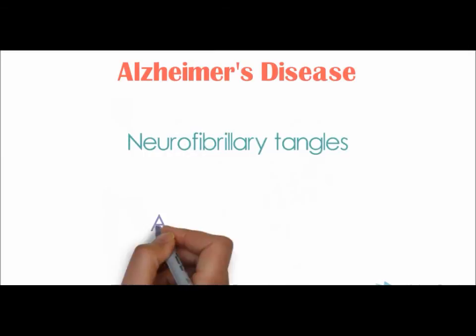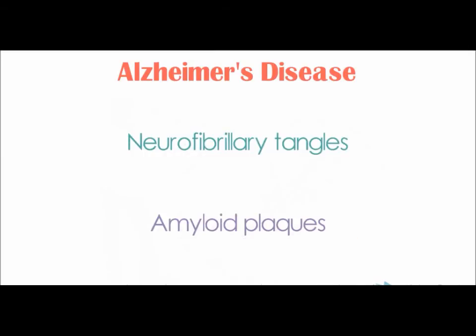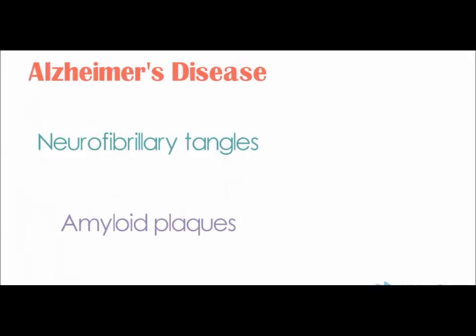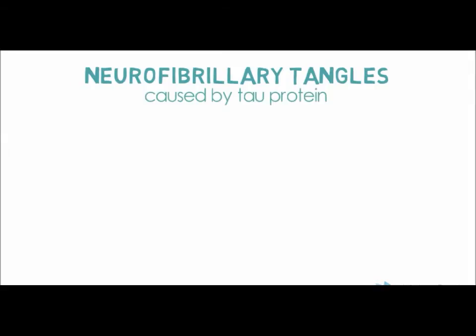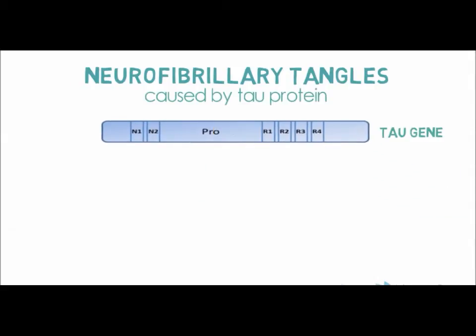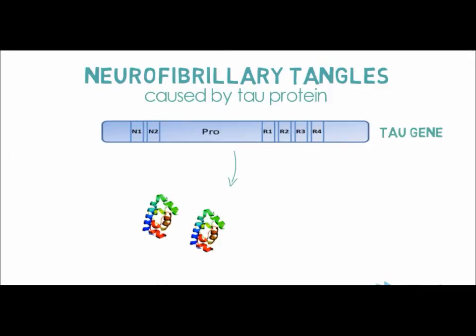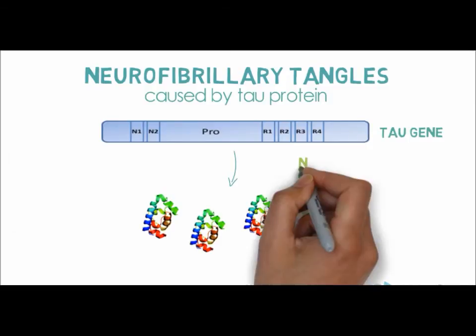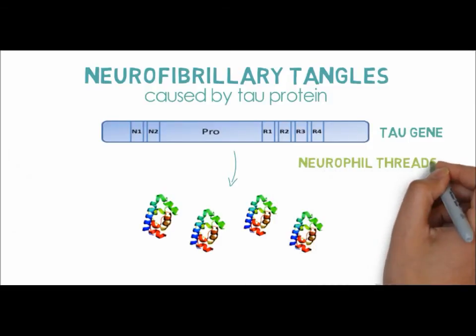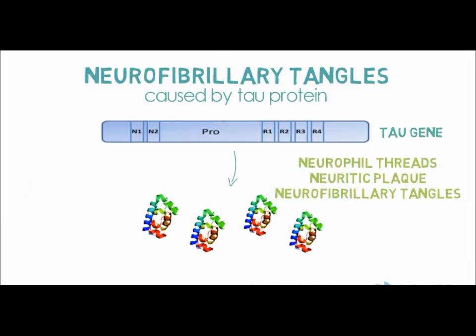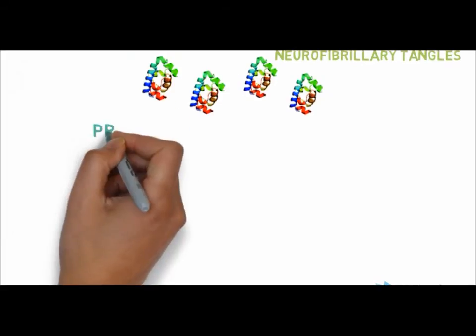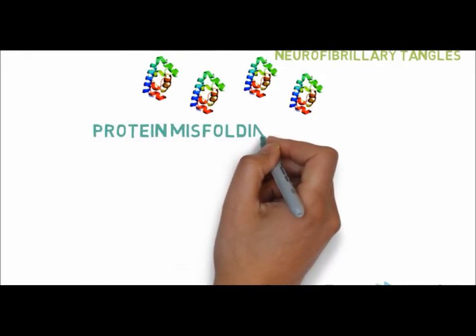Tau is a microtubule-associated protein that is encoded on chromosome 17. The gene product undergoes alternative splicing to give 6 canonical isoforms containing 0, 1, or 2 N-terminal inserts and either 3 or 4 microtubule binding repeats. However, in Alzheimer's, all tau isoforms consist of neurofilaments, neuritic plaques, and neurofibrillary tangles caused from protein misfolding. The aggregation of tau into fibrillar structures is influenced by various post-translational modifications, namely phosphorylation and nitration.